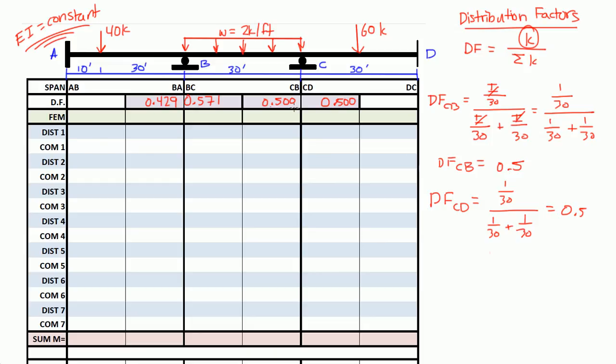So the next step, we calculated the distribution factors for each of the middle joints. And remember, when we do a moment distribution, all we look at is the joints in between the two farthest ends, A and D. So for the fixed end moments, actually let's break up the fixed end moments into its own video. So in the next video, we'll calculate the fixed end moments. Alright, see you then.